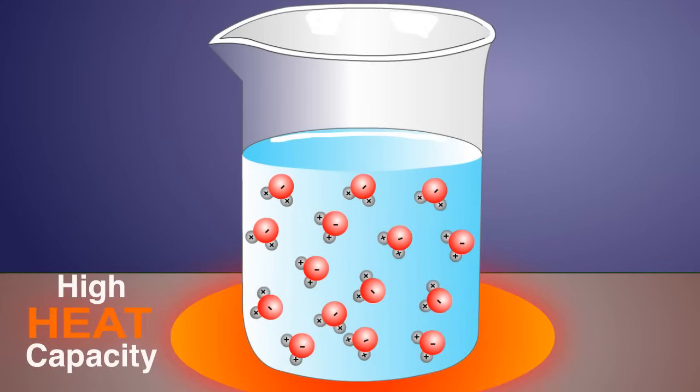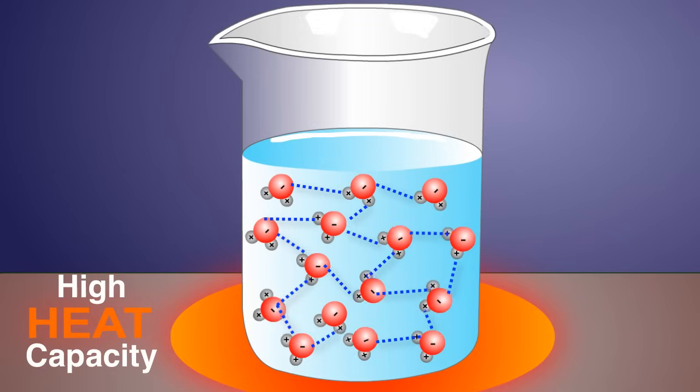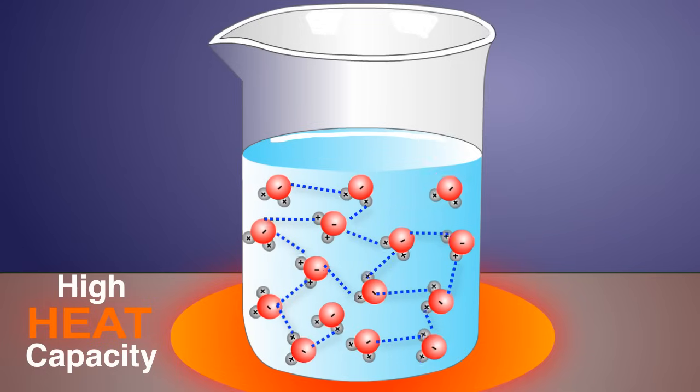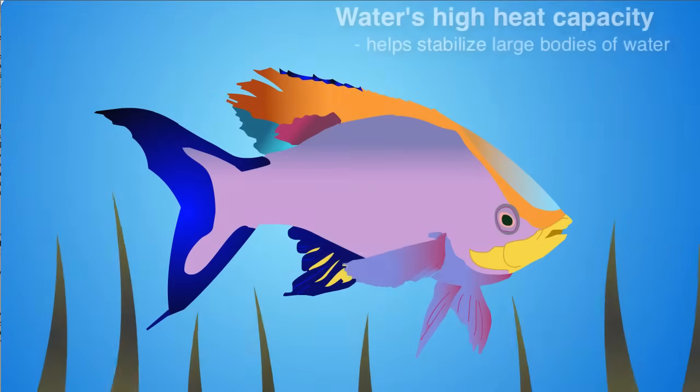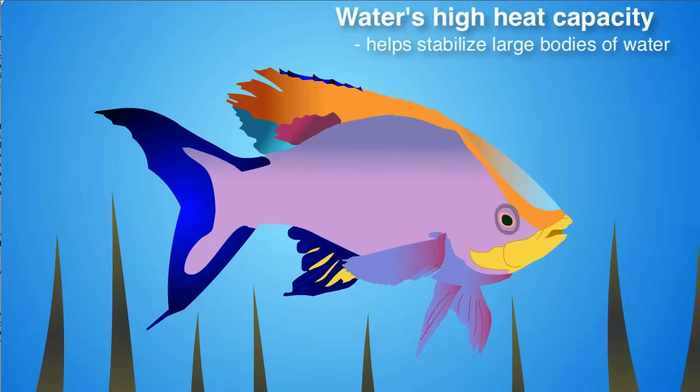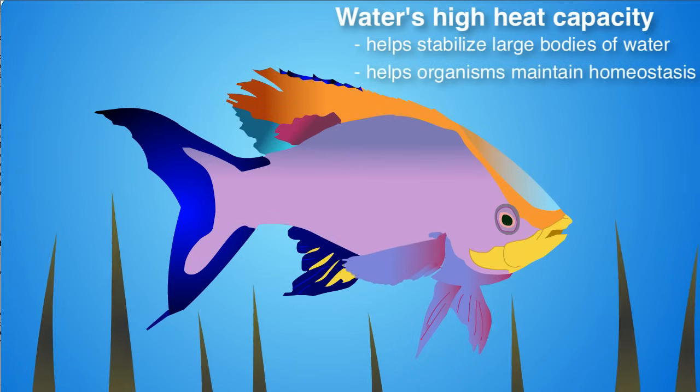Water has a high capacity for heat. What this means is that the many hydrogen bonds that link water molecules let water absorb a large amount of heat without changing its chemical state, for example, from liquid to gas. This not only stabilizes the temperature of bodies of water, such as lakes and oceans, but also plays an important role in the physiology of an organism.